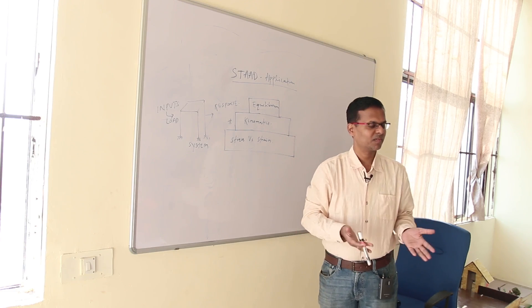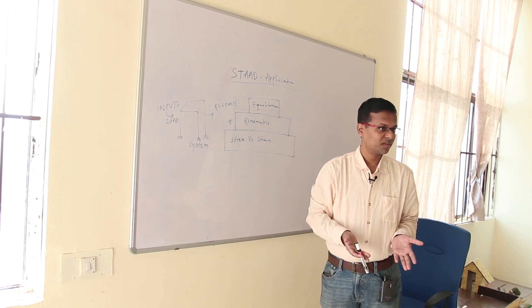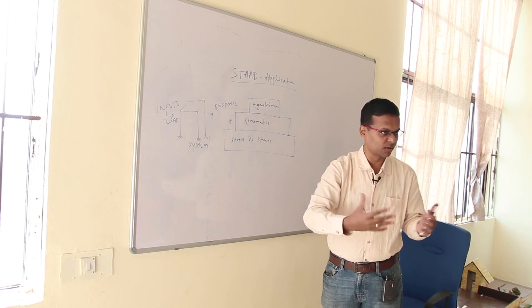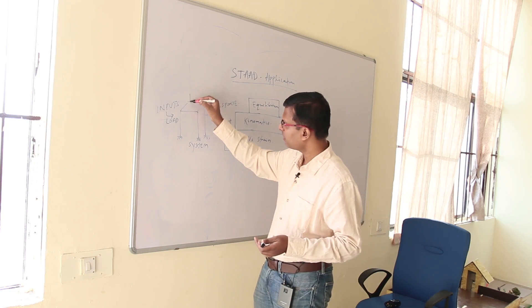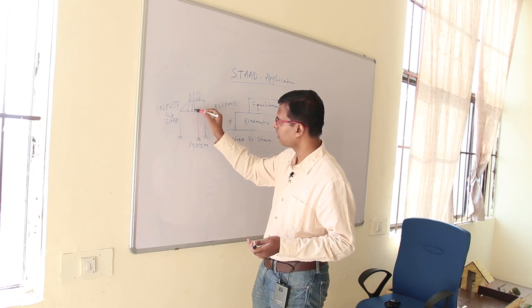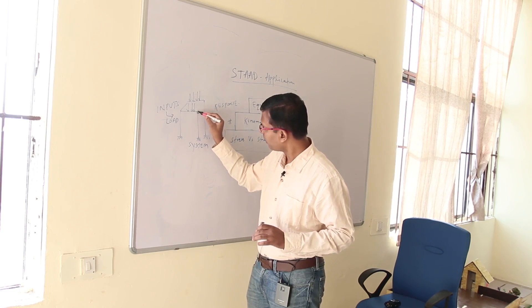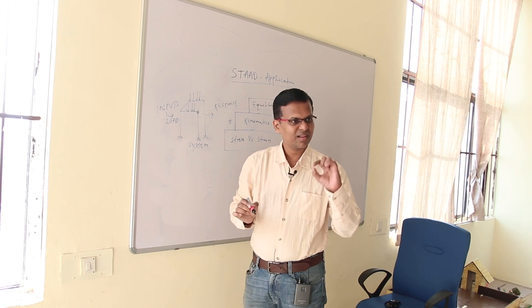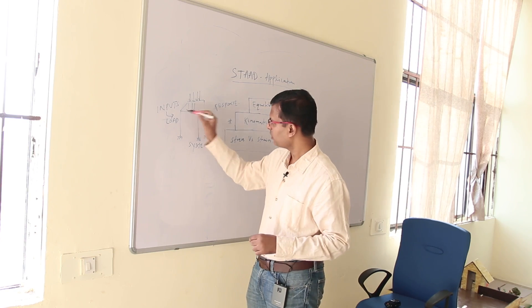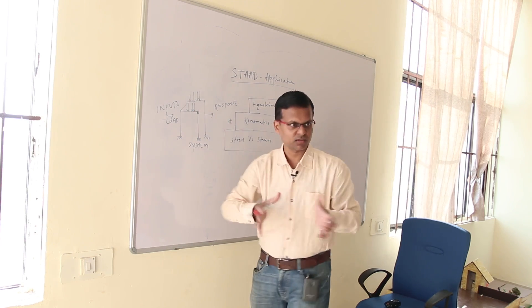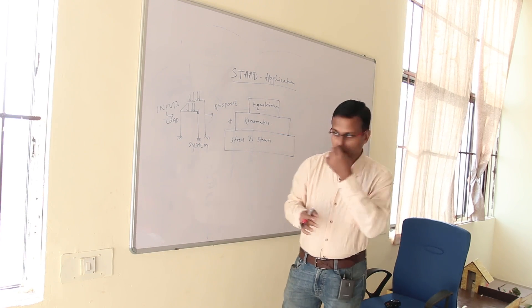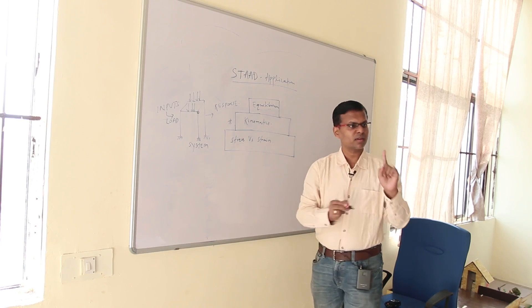Equilibrium — which equilibrium? The global equilibrium and local equilibrium. Suppose the structure is subjected to a certain load; at all the joints you need to get the equilibrium equation, and over the global direction, over the whole structure, it also has to be stable. So the equilibrium condition requires you to have the equilibrium system.